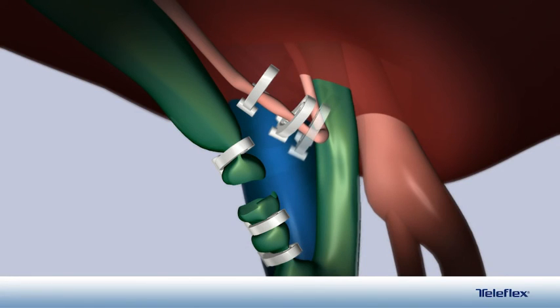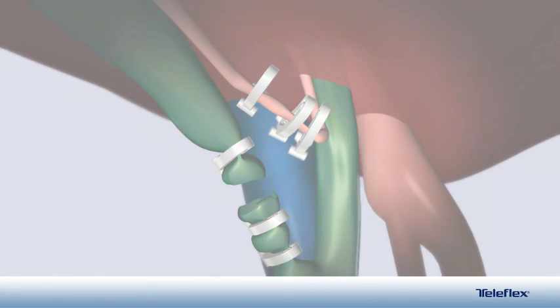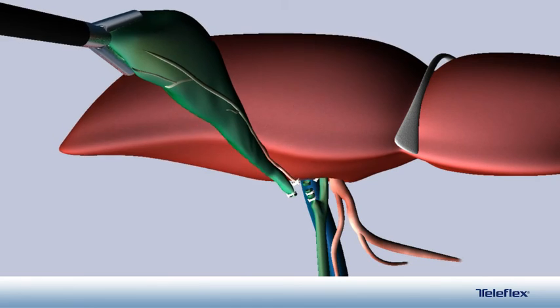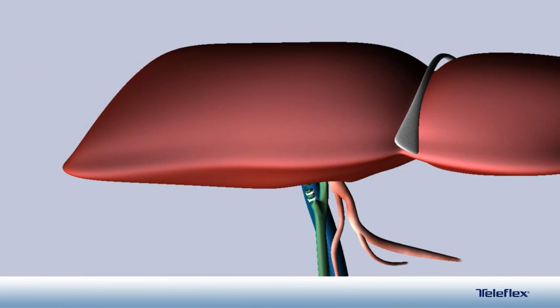The same technique is repeated for the cystic artery. The gallbladder is freed from the liver bed and removed in normal fashion.